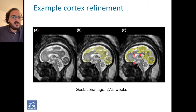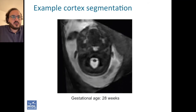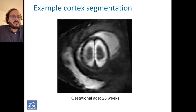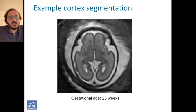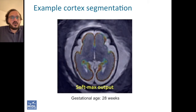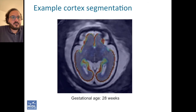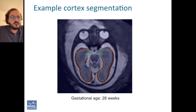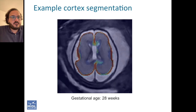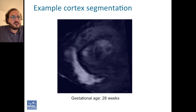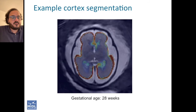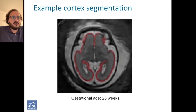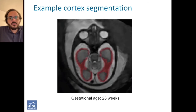And this is an example of how our final model performs on a completely held-out scan — in this case, a 28-week gestational age scan. You can see the softmax output of our model and the thresholded segmentation of cortical gray matter.